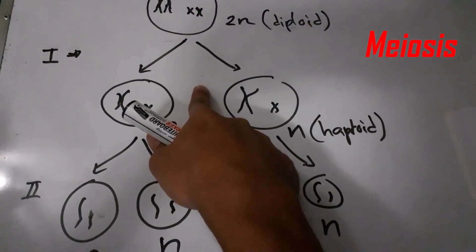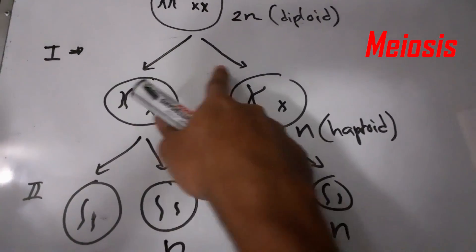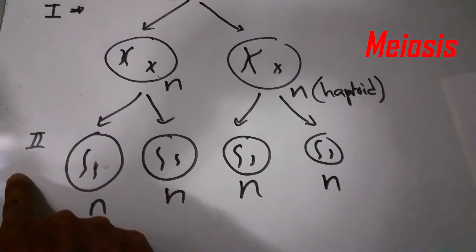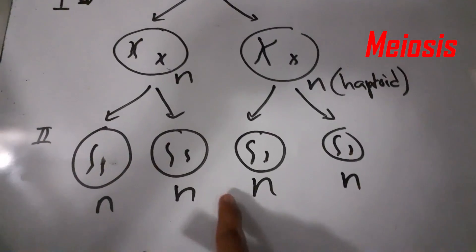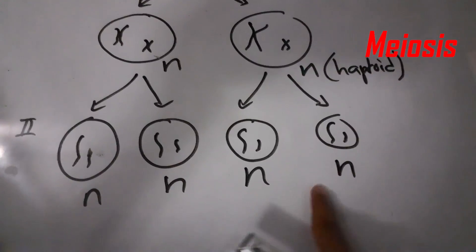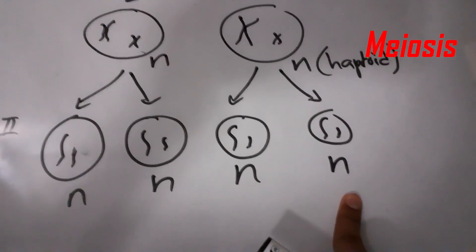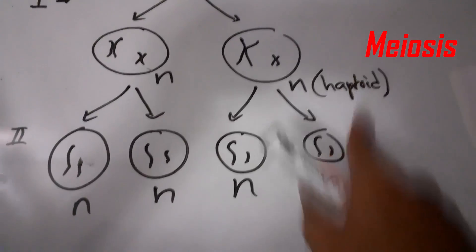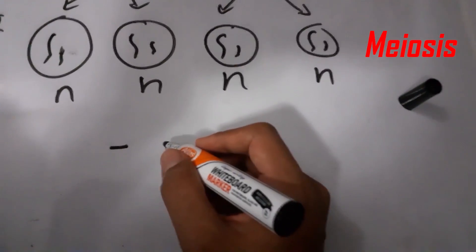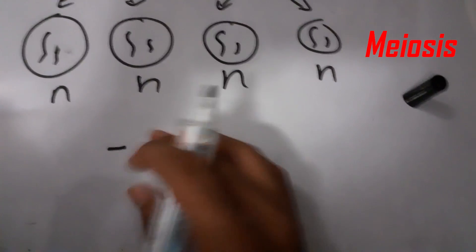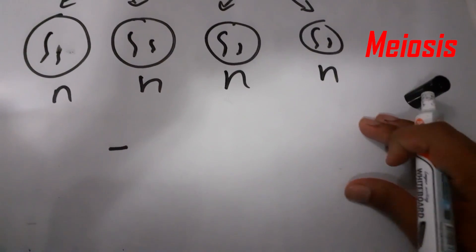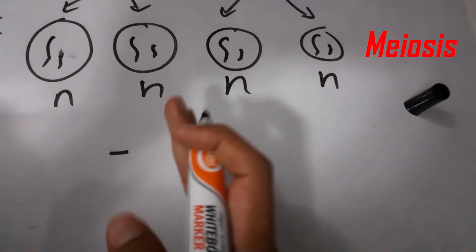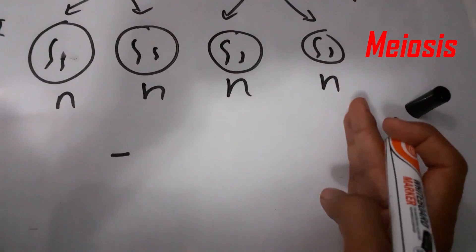The first division is a meiotic division, and the second one is a mitotic division. The significance of meiosis is that it helps to maintain the constant number of chromosomes from generation to generation.